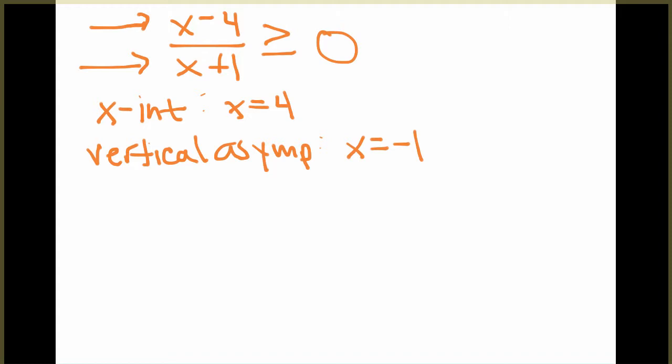The reason that we want to look at the x-intercepts and vertical asymptotes is because when we're solving this, we're comparing it to 0.